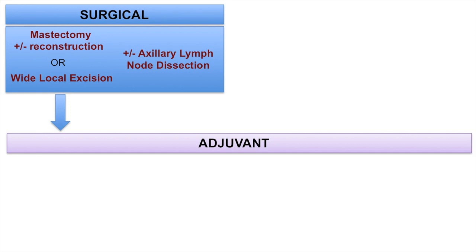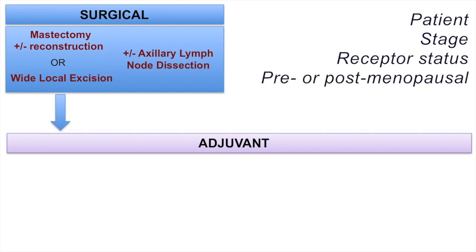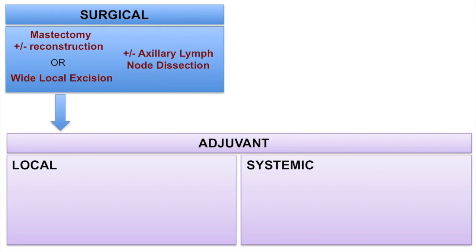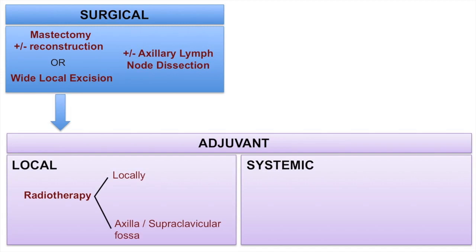Next up is adjuvant treatment, which must be started as soon as possible after surgery. The precise treatment given will depend on factors such as the individual patient, the stage of disease, the receptor status, and whether the patient is pre- or post-menopausal. Adjuvant therapy may be either local — directed at reducing the risk of disease recurrence in the breast — or systemic, designed to kill undetectable cells harbouring somewhere distant. Locally, treatment is radiotherapy. In most patients it is indicated, although according to NICE guidelines in the UK, some people don't need it — for example, certain low-risk patients who have had a mastectomy and are node negative. Axillary or supraclavicular fossa radiotherapy will depend on the lymph node positivity and whether the patient has had an axillary clearance.